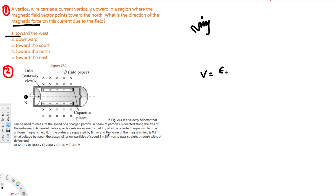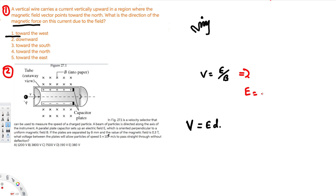So v = E/B is the equation we have to use. We are trying to find the voltage. Using capital V for voltage, capital V is equal to E times d. We know the distance is 8 millimeters; we have to find the electric field — it's not provided, but we can find it using the first equation. Rearranging, E is going to be equal to v times B.